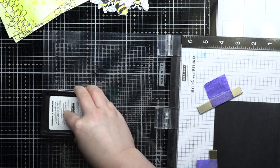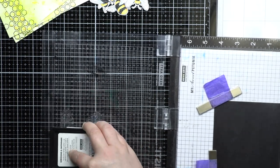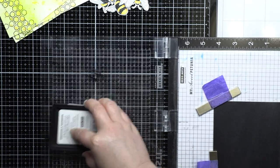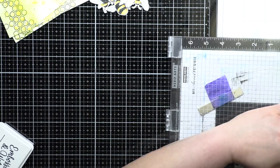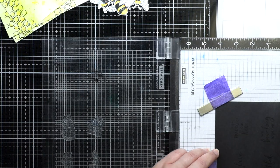Next I stamp four of the sentiments onto black cardstock with embossing ink and heat emboss them with white embossing powder. I trim them down to squares and rectangles and then matte them with frames cut from the black glitter cardstock included in the kit.